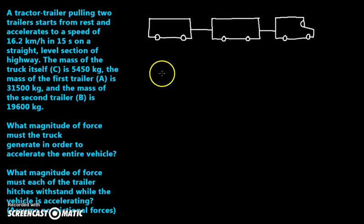I've got a tractor trailer, a big truck, pulling two trailers that starts from rest and accelerates to a speed of 16.2 kilometers per hour in 15 seconds on a straight level section of highway. Now it says straight level section - if this was a different question where the tractor trailer was pulling up an incline, the question would be very different and much more difficult. You can be happy to know you'll never be asked this kind of question because that's something you'll be doing in Physics 12.